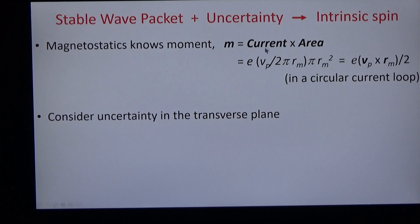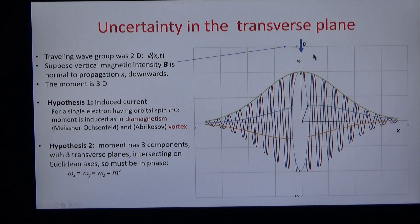Magnetostatics knows moment is current times area, which is the same as velocity times half the magnetic radius. Consider uncertainty in the transverse plane. Try switching on a magnetic field above a passing wave group. A current is induced on the horizontal plane, like diamagnetism in Meissner-Ochsenfeld effect or the vortex in the Abrikosov lattice.